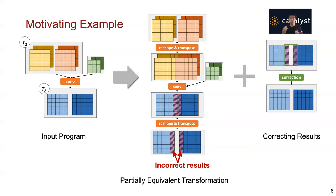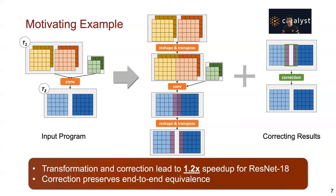To fix the incorrect results, we can apply a correction operator afterwards on the incorrect pixels to recover end-to-end equivalence. This transformation, together with the correction, leads to 1.2 times speedup for ResNet-18, which is a common computer vision model. The correction preserves end-to-end equivalence and guarantees no model accuracy loss.